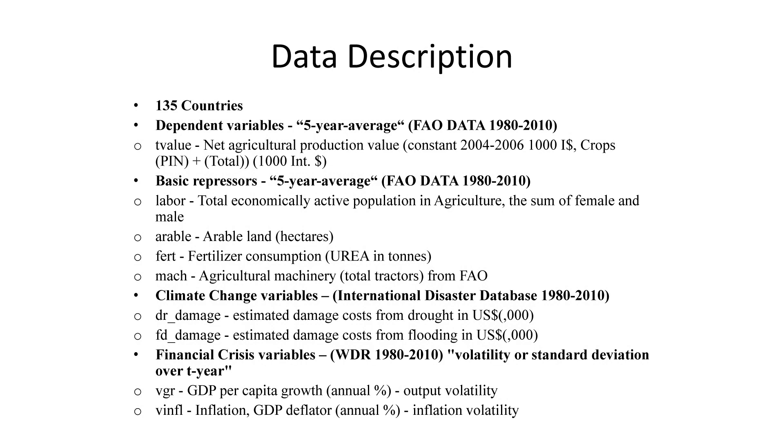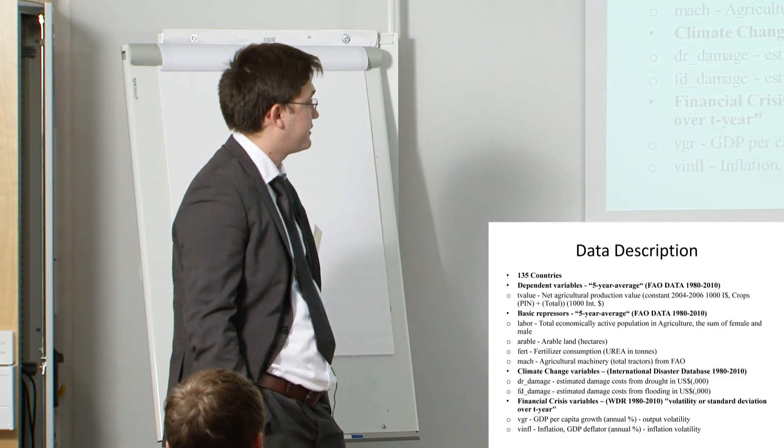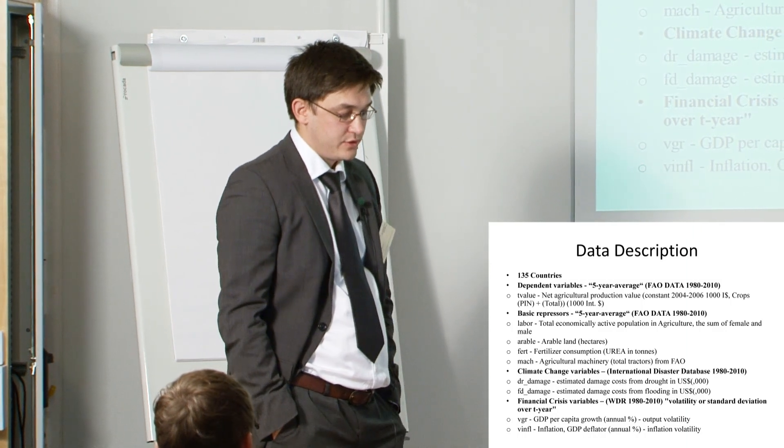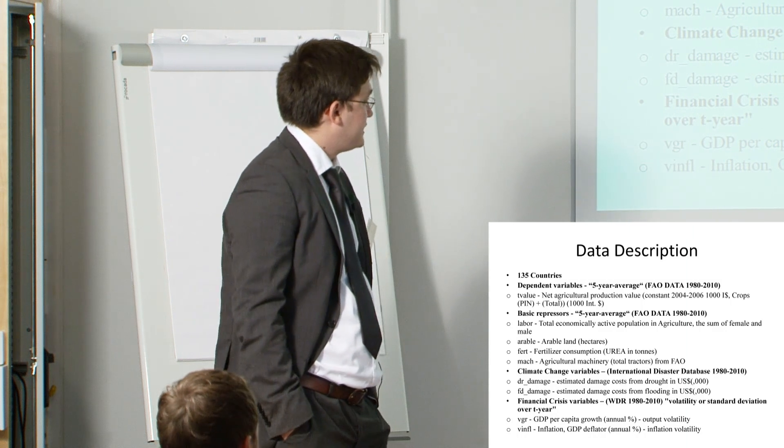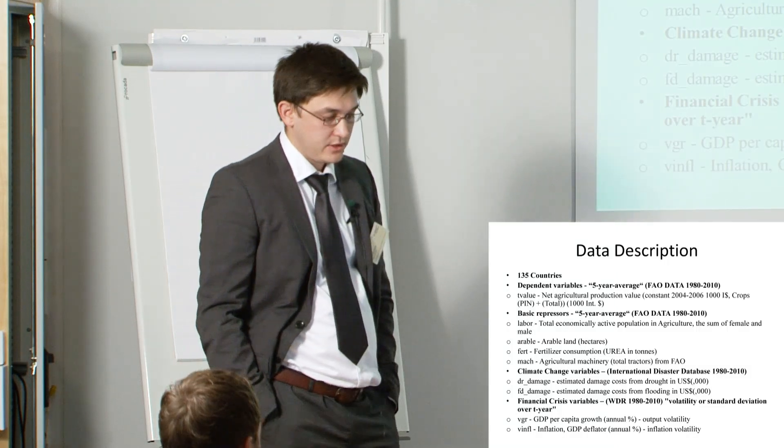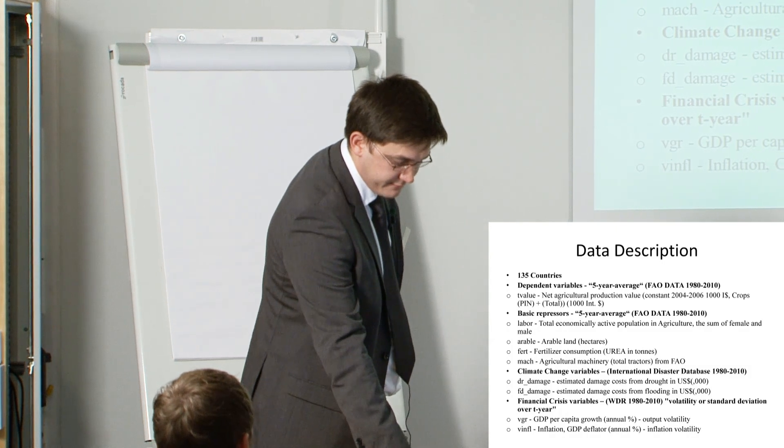For the climate change variables we have used the database from the International Disaster Database, the years which include 1980 and 2010. Our climate variables are drought, estimated damage caused from drought and estimated damage caused from flooding. We also included financial crisis variables from the world development report. These are the GDP per capita growth as an output volatility and inflation volatility over the given years as a five year average.